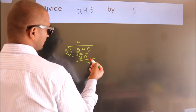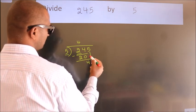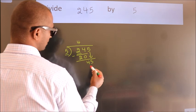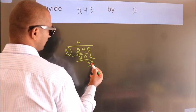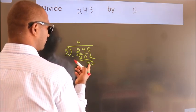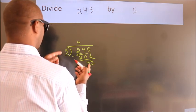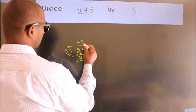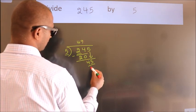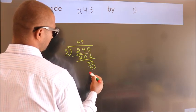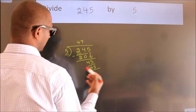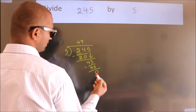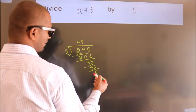After this, bring down the beside number. So 5 down, making 45. When do we get 45 in the 5 times table? 5 nines, 45. Now we subtract. We get 0.